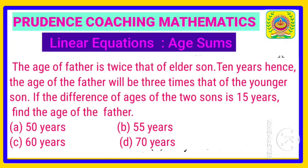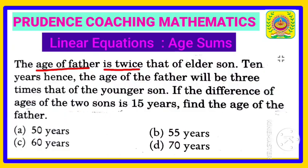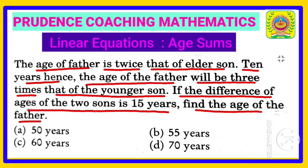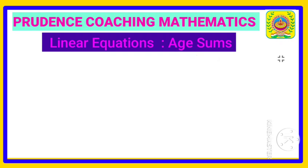The age of the father is twice that of the eldest son. Ten years hence, the age of the father will be three times that of the youngest son. If the difference of the ages of the two sons is 15 years, that means the eldest son is 15 years more than the youngest son. Find the age of the father.